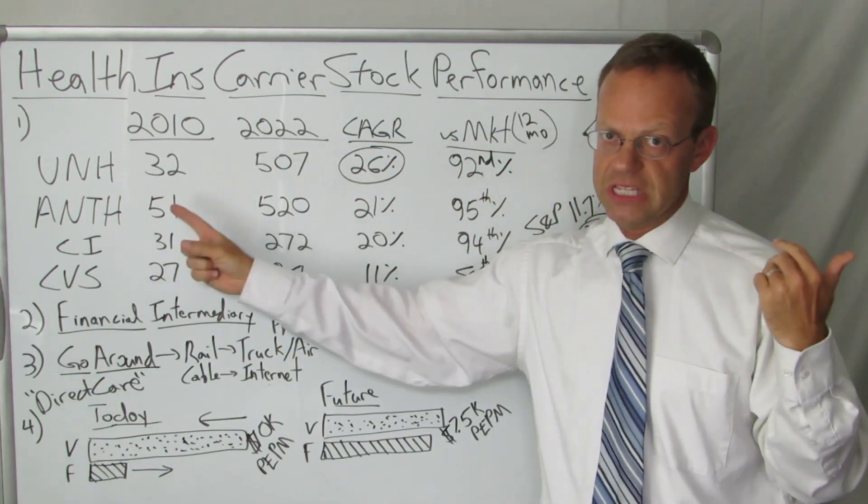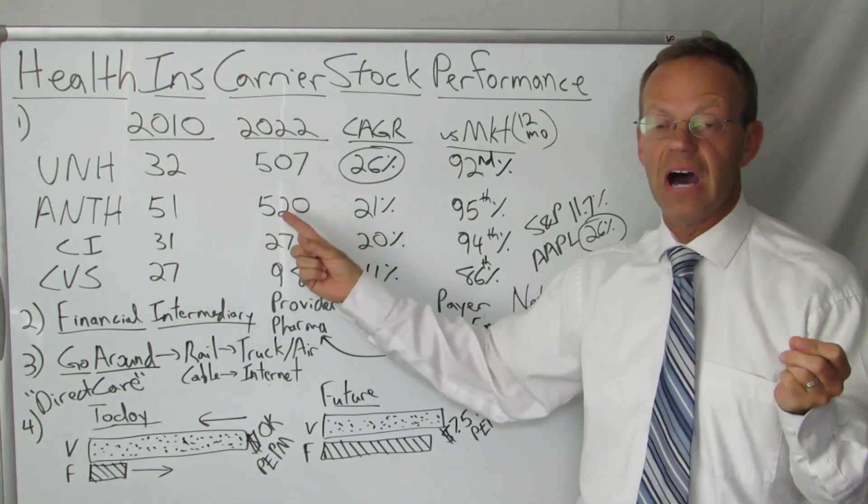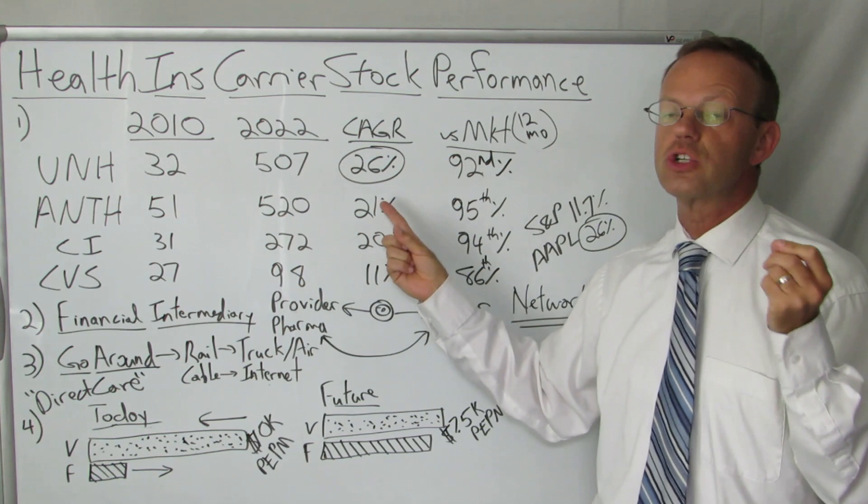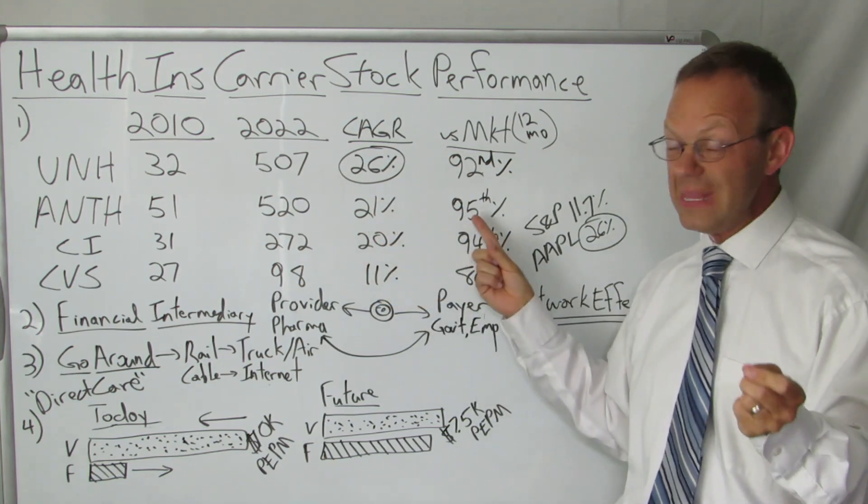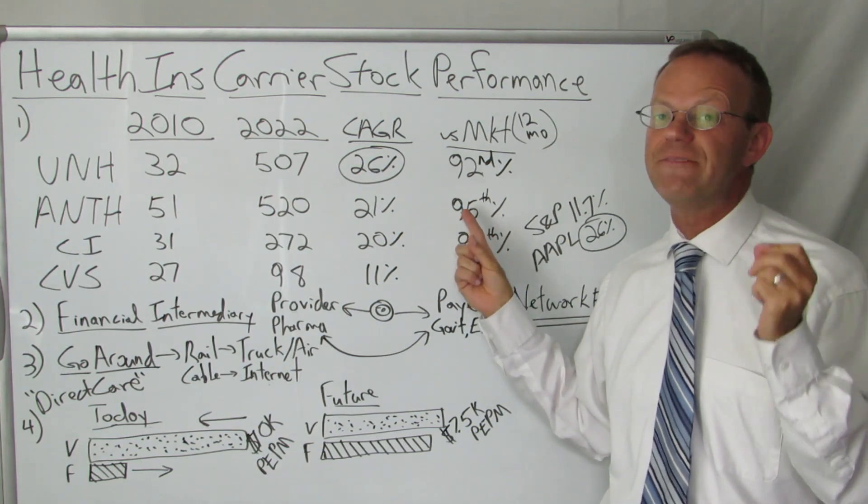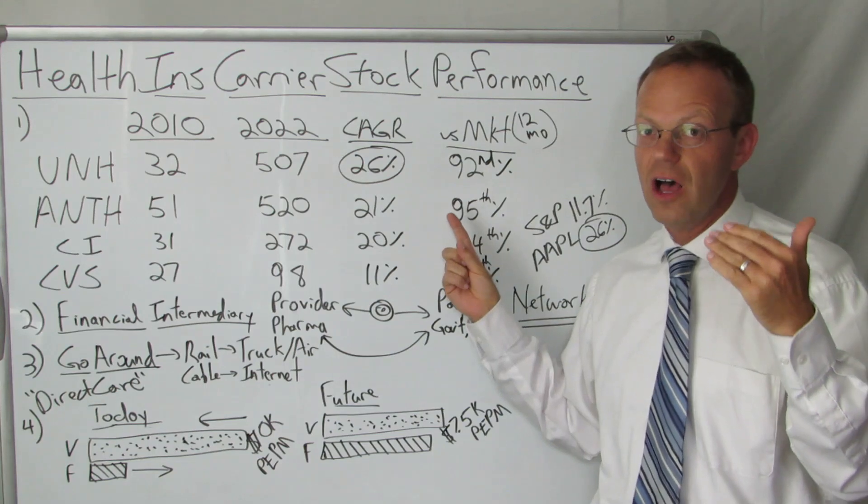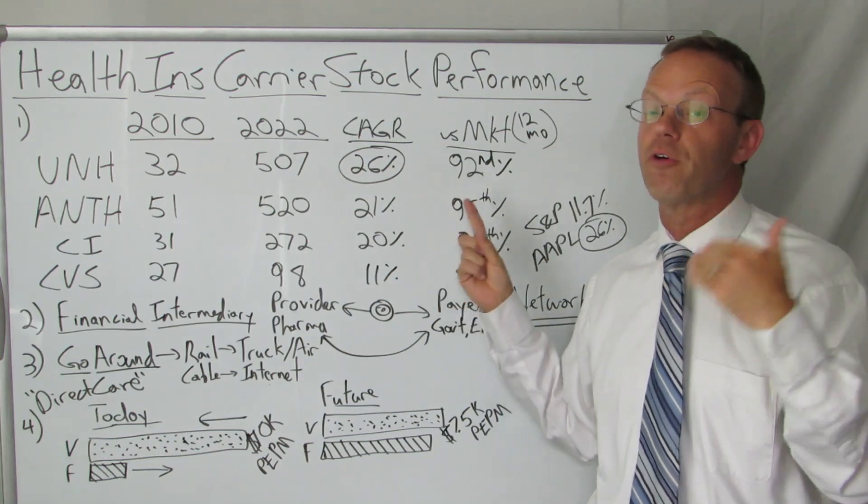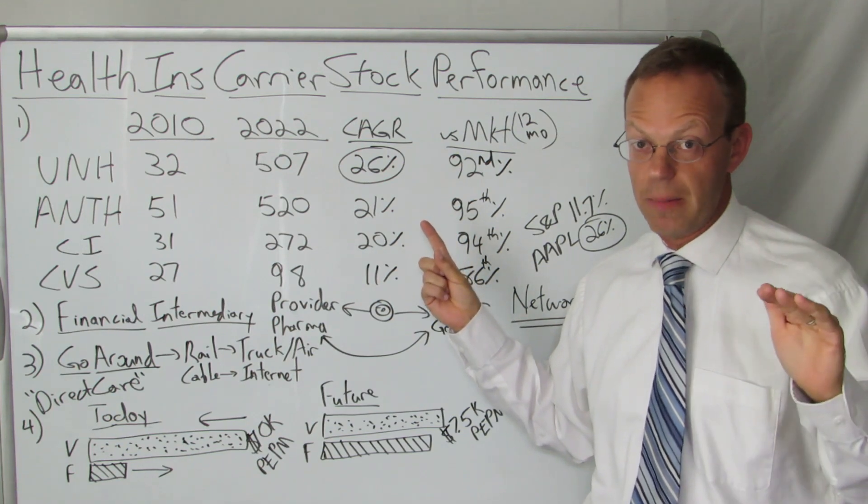Next up, Anthem. Back when the ACA was passed, its stock was 51. Today, their stock price is 520. That is a 21% compounded annual growth rate. In the past 12 months, they are in the 95th percentile. Their performance has been better than 95% of all other stocks in America.